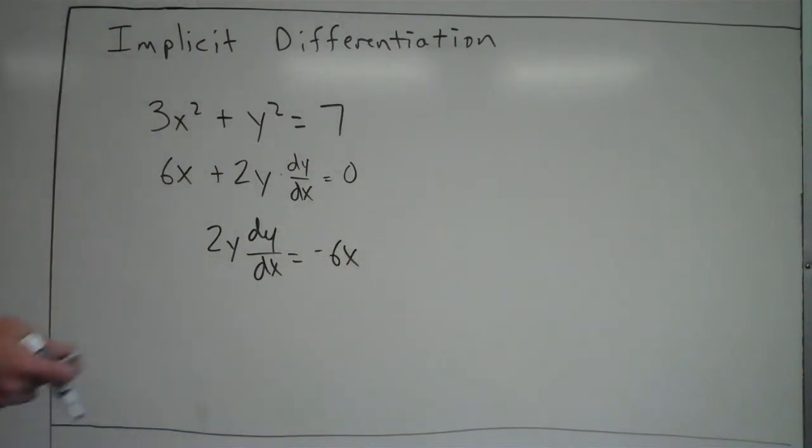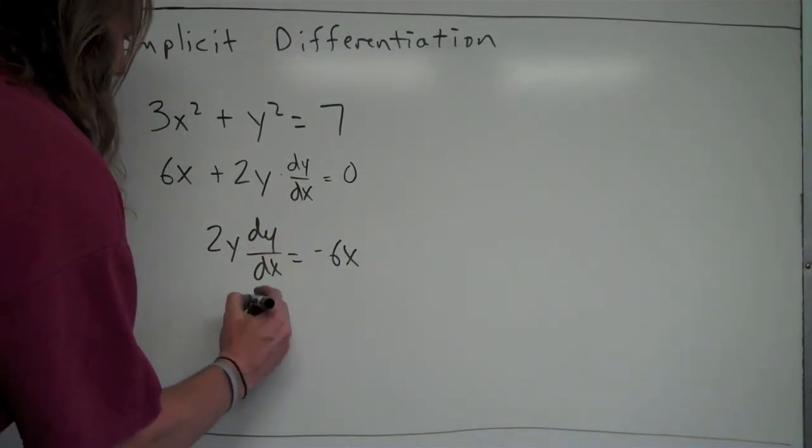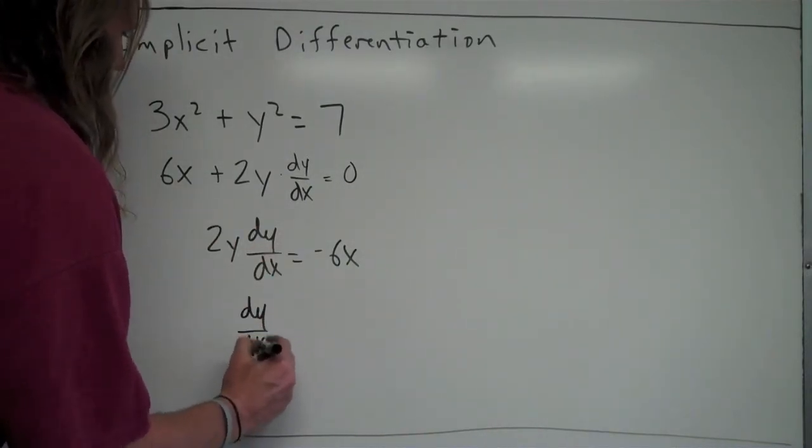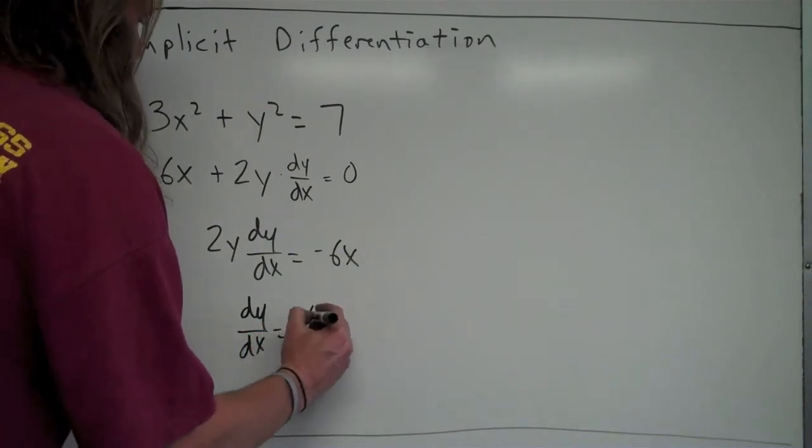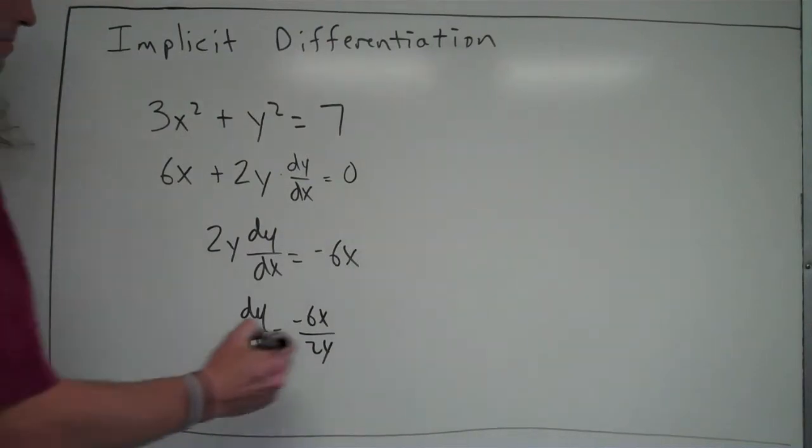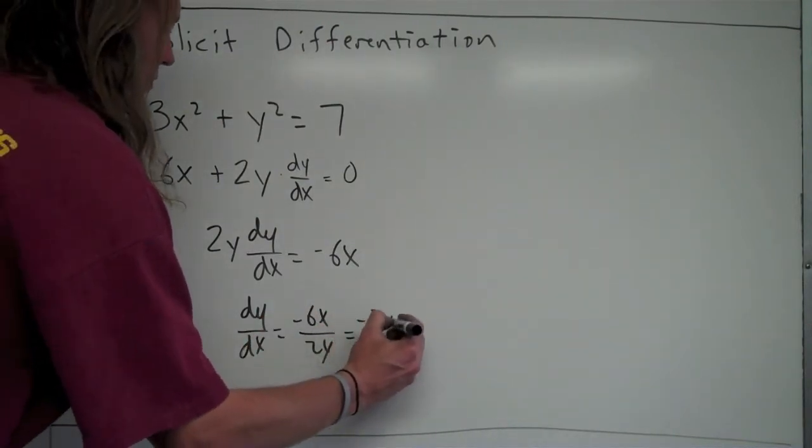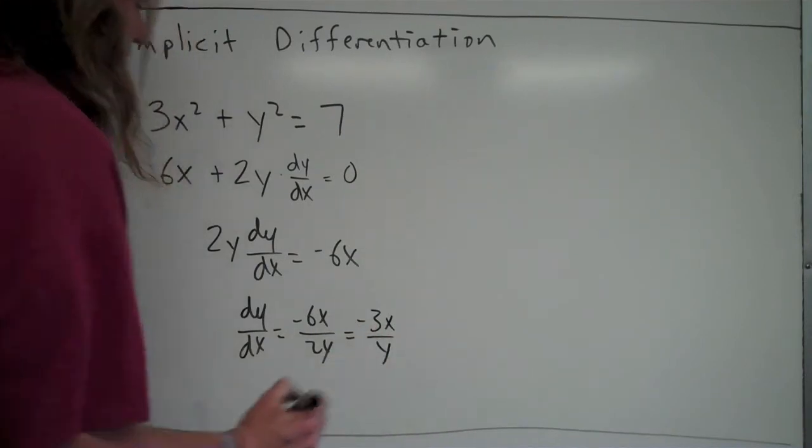And at this point, I want to try and get dy over dx by itself, so I'll go ahead and divide both sides by 2y, so I'll get dy over dx is equal to negative 6x over 2y. And I could simplify that if I wanted to, 6 and 2 divide to the negative 3x over y.